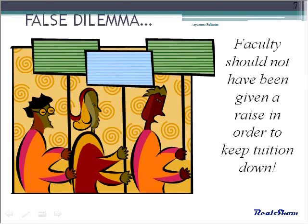The next fallacy is false dilemma, sometimes called false choice. If someone gives an argument that offers only two alternatives, look carefully at the options — are there really only two, or are there three or even more? A common one is in abortion arguments, where it's said people should have access to abortion, or very poor, ignorant girls will be raising very poorly cared-for children. Well, that leaves a lot of other choices: perhaps the children having children aren't poor or uneducated, and perhaps adoption is an option. Be very careful to see if there are more choices than are being presented.